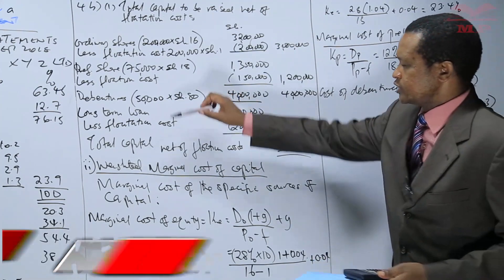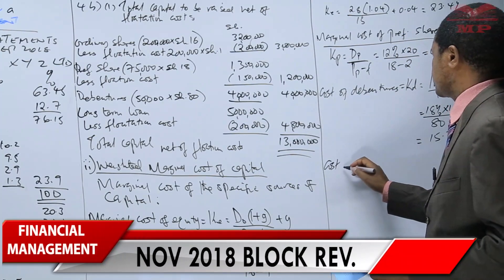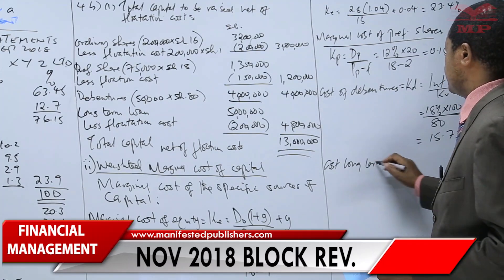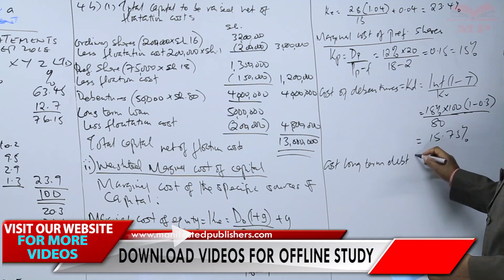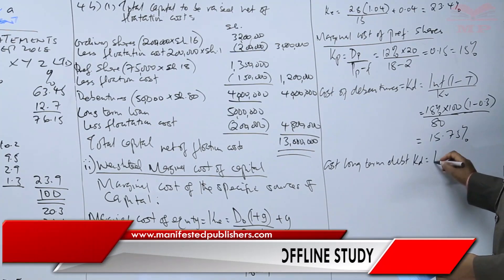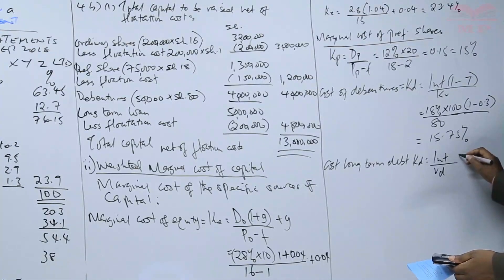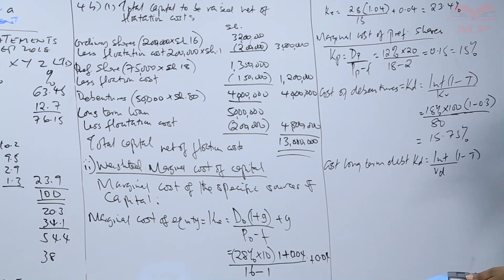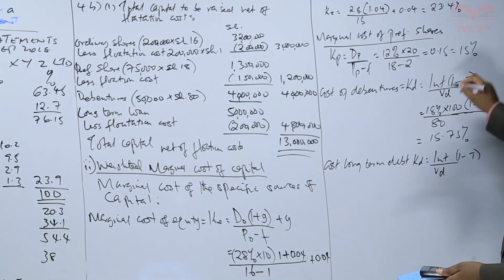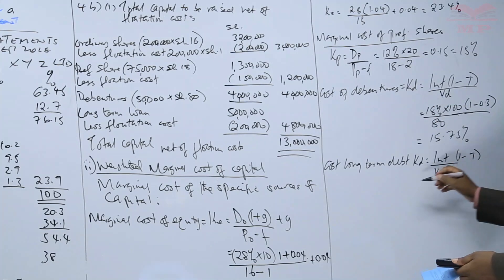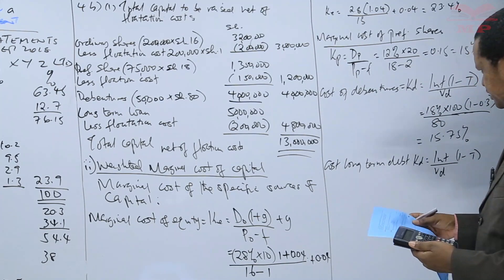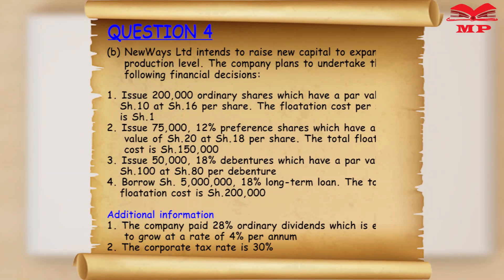Then the marginal cost of long-term debt. Kd will be equal to interest over VD, times (1 minus T), where VD is the market price of the long-term debt. From note number four: borrow 5 million at 18% long-term debt, with a flotation cost of 200,000.